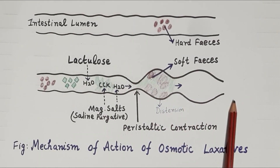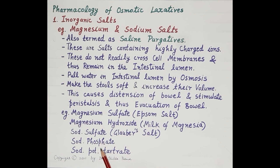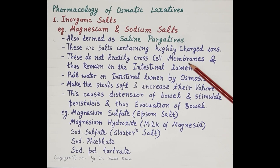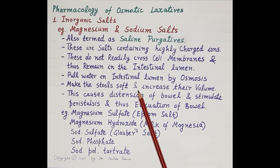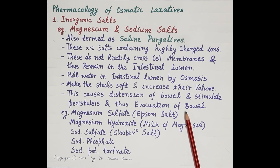The pharmacology of inorganic salts includes magnesium and sodium salts such as magnesium sulfate, magnesium hydroxide, sodium sulfate, sodium phosphate, and sodium potassium tartrate. Inorganic salts are also termed saline purgatives. They contain highly charged ions, and because of these ions they do not easily cross the cell membrane. Thus they remain within the intestinal lumen and pull water in by osmosis, making stools soft and increasing their volume. This increase in volume puts pressure on the GIT wall, causes distension of the bowel, stimulates peristalsis, and results in easy evacuation.